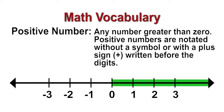Positive numbers are numbers that are greater than zero. They can be written as three or plus three. They go on forever to the right on the number line.